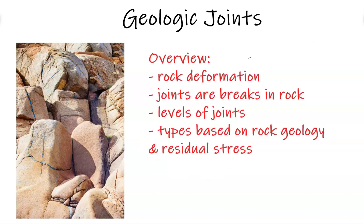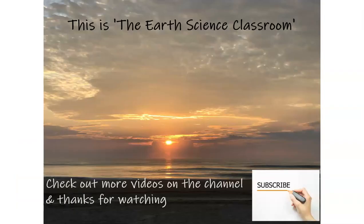In review, you're looking at rock deformation between the different ways it can break rock. Once you break the rock it's called a fracture, and joints are simply larger fractures that are connected. They're breaks in the rock and you can get different levels of joints, joint sets, and joint systems based on the severity of the joints throughout the rock. You can get different types based on the rock geology and extensive nature of the joints based on location, and this is based on the stress that is applied to the rocks. This is the Earth Science Classroom. Thank you for watching, I hope you enjoyed the content. Check out more videos on our channel and don't forget to subscribe. Thank you again.